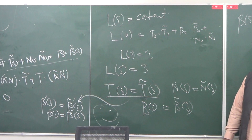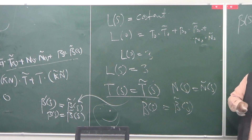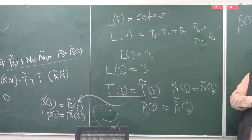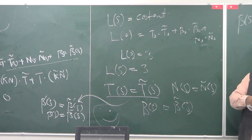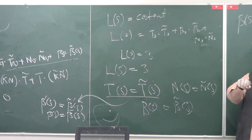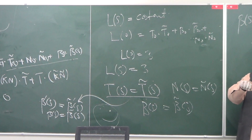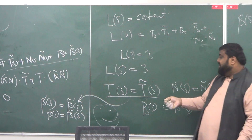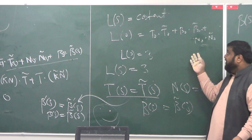If they are parallel to each other, their dot product is going to equal the product of their magnitudes with cosine of zero. The cosine of zero gives you one, and the magnitude of each vector is one. Hence you get one.